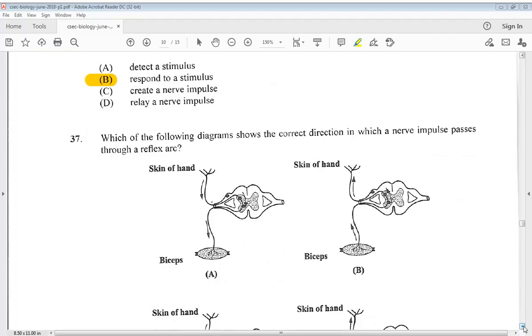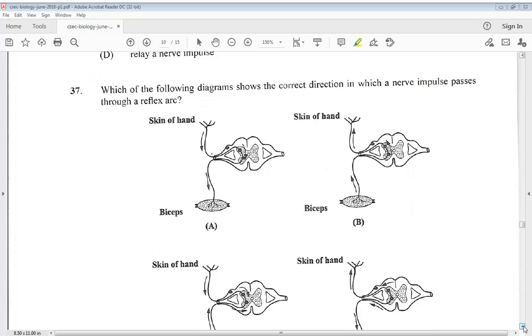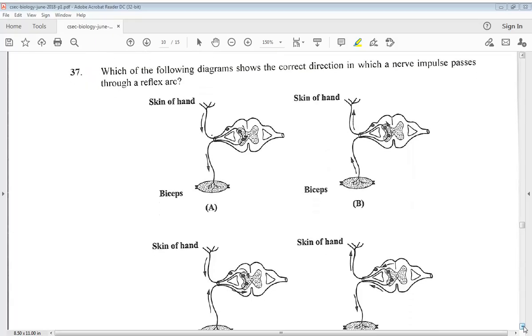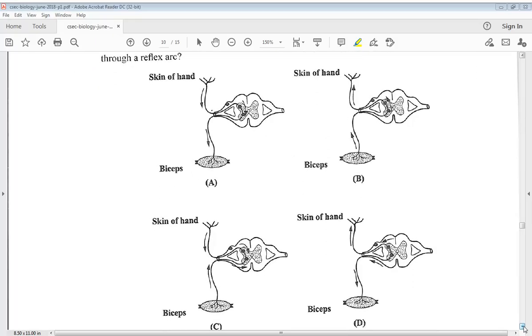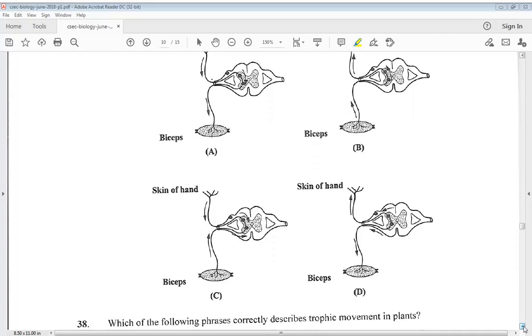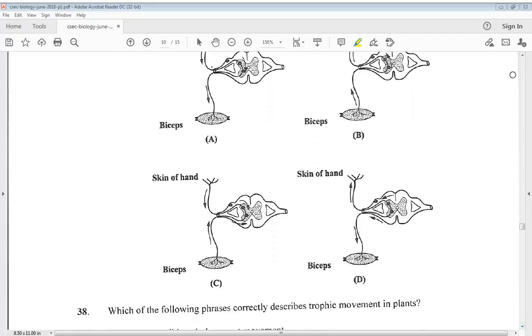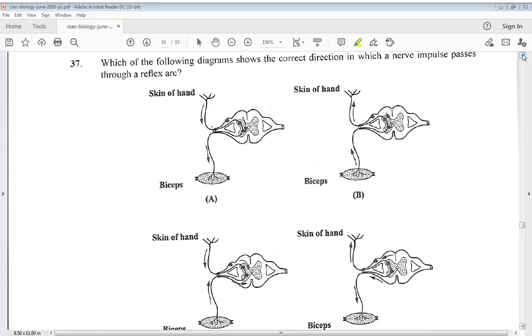Question 37. Which of the following diagrams shows the correct direction in which a nerve impulse passes through a reflex arc? So there we have our diagrams. So which one of these would be our answer? So we know it would be A.